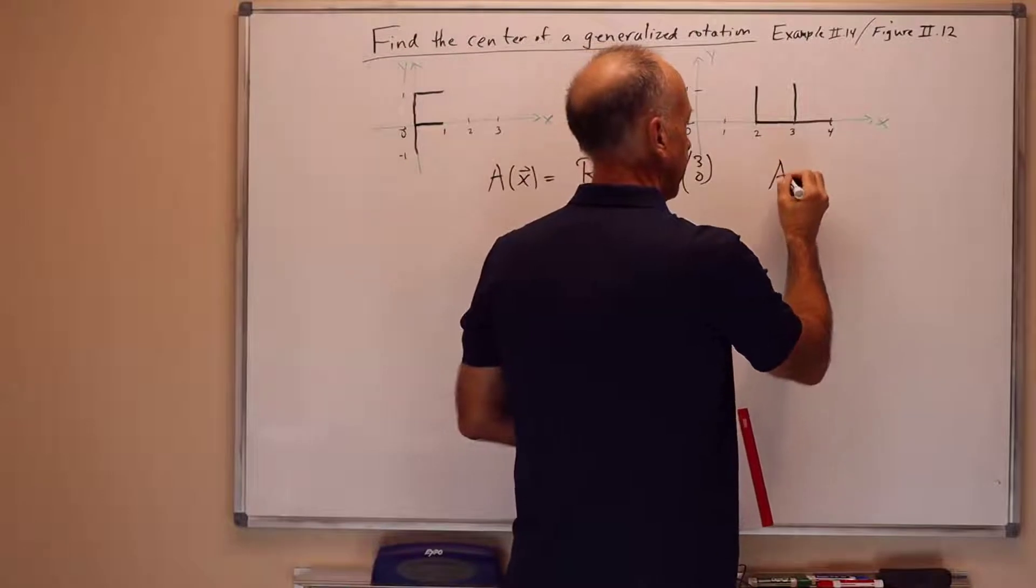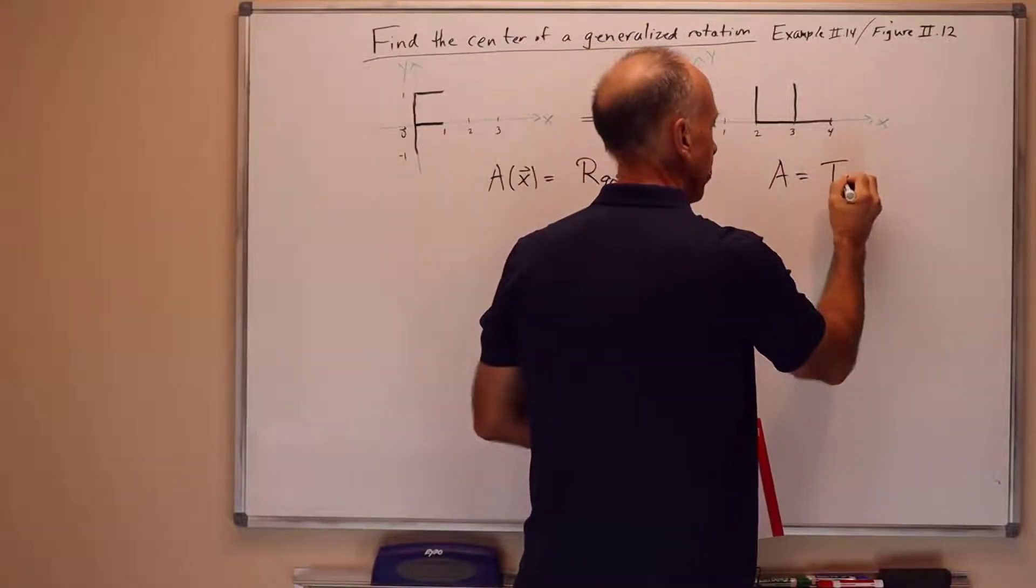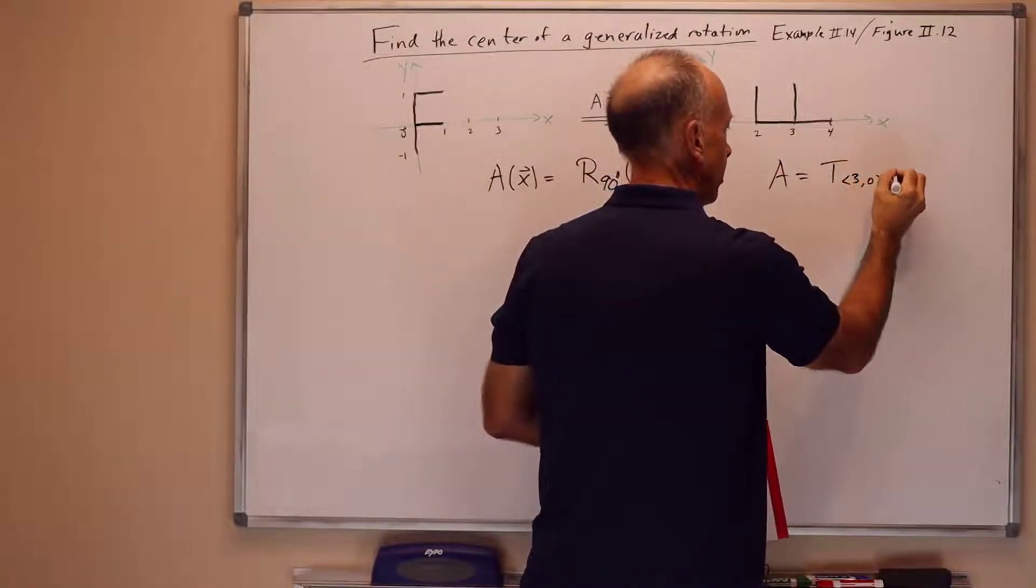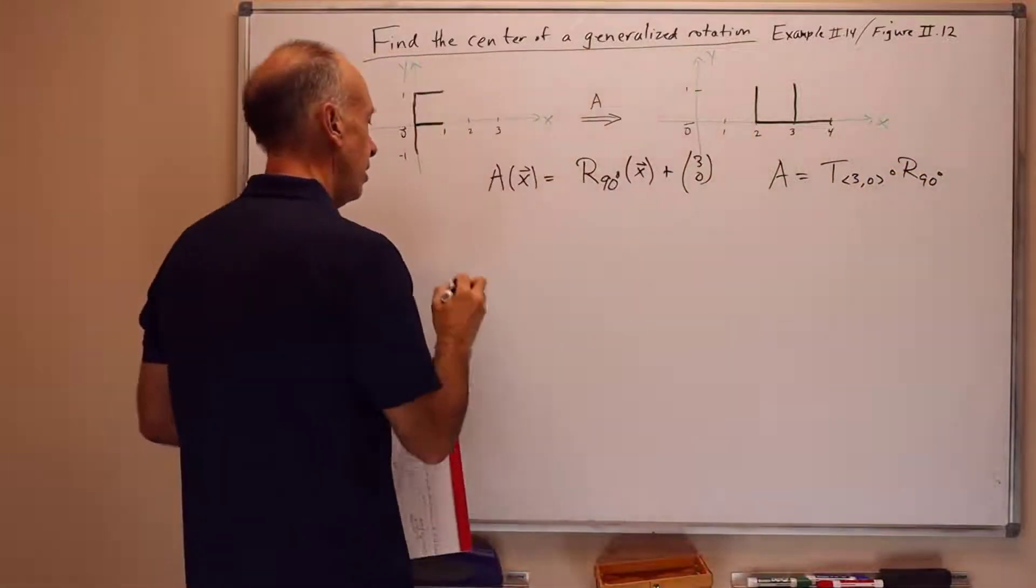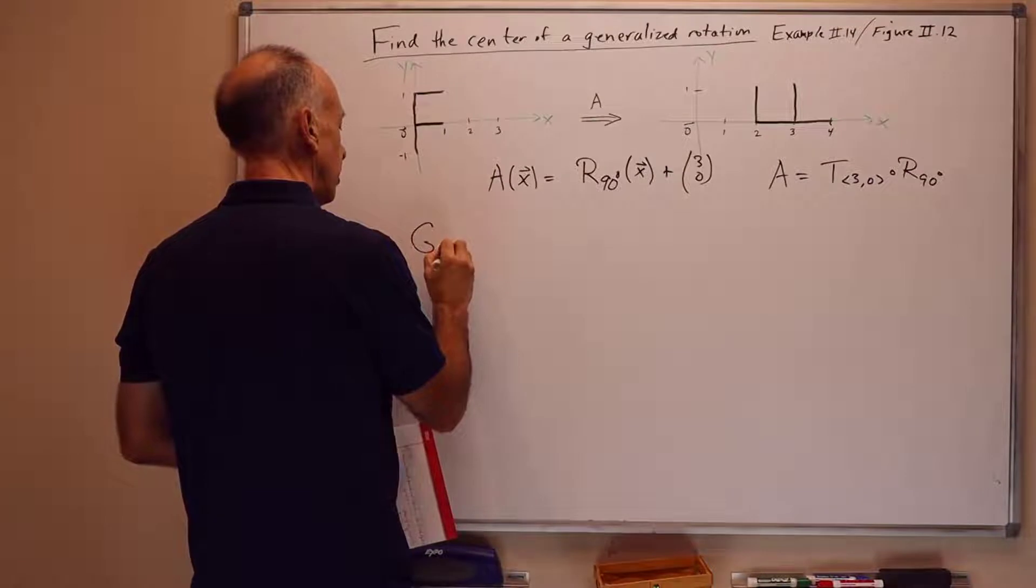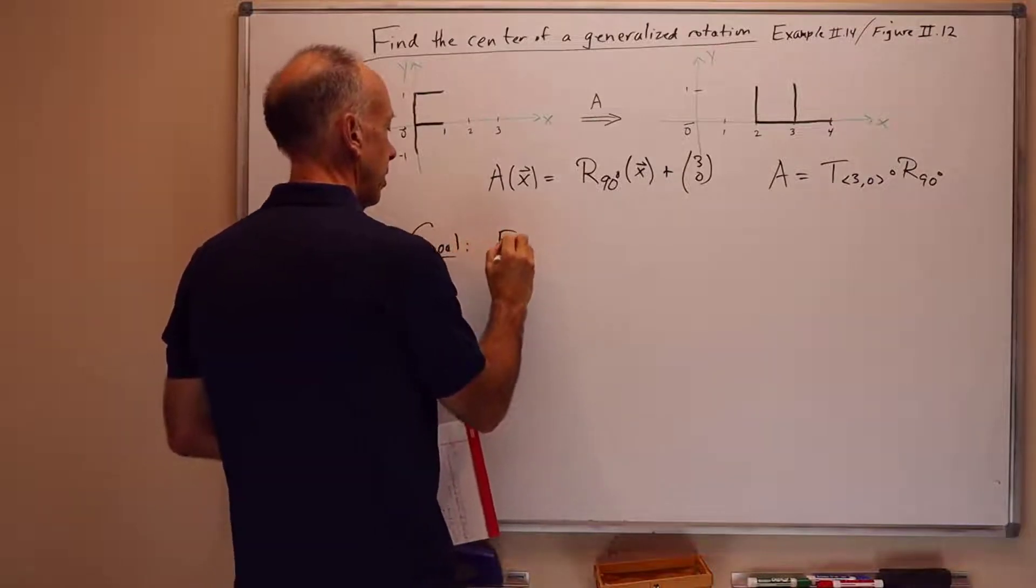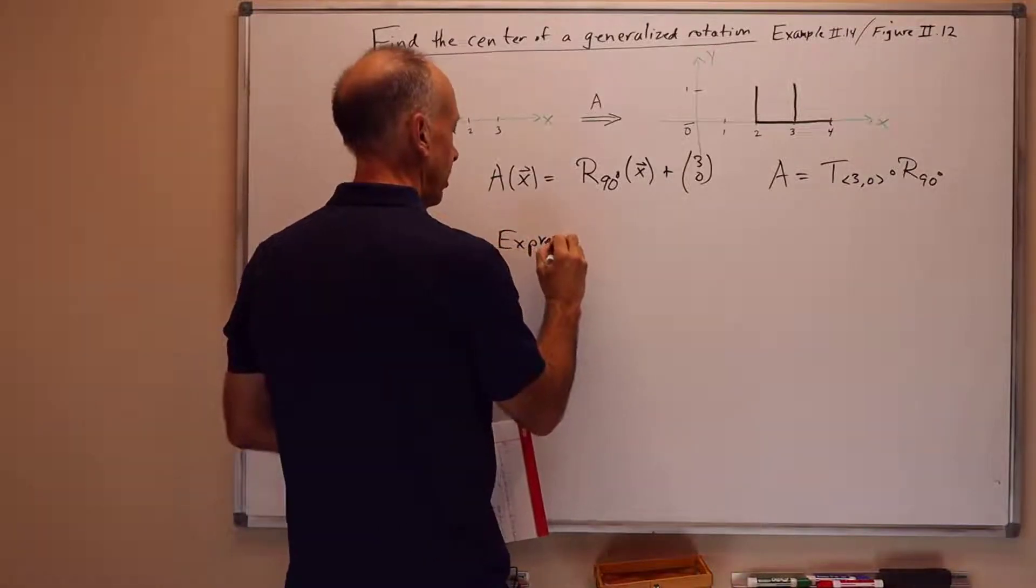So in other words, A is the same as T sub (3,0) composed with R 90 degrees or R pi halves. Our goal here is to express A as a generalized rotation.